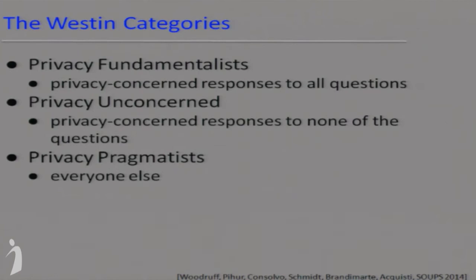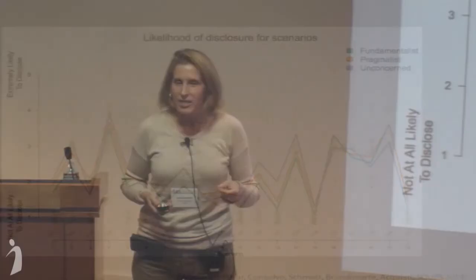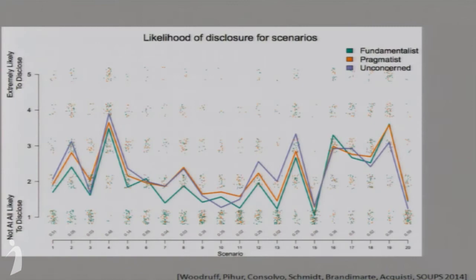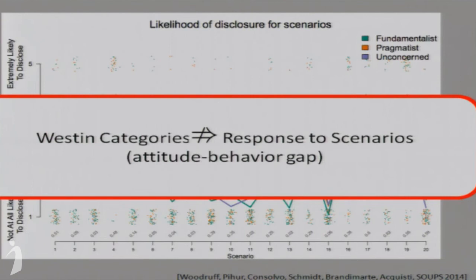Woodruff, Peher, Consalvo, Schmidt, Brandimarte, and Acquisti have a paper at SOUPS this year examining this. They did a large-scale survey asking participants the Westin Scale questions and also gave them behavioral-intent scenario questions. Looking at 20 scenarios, with color coding — green for fundamentalists, red for pragmatists, blue for unconcerned — the disappointing finding was that except for a few exceptions, all three buckets tracked pretty closely. The Westin Scale doesn't appear to help us anticipate variation in behavior. A huge open problem: what scale would do this?